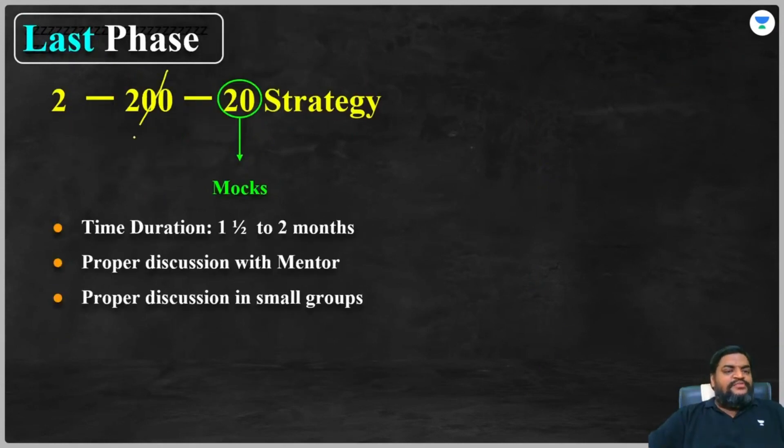What is this third part? This is nothing but mocks. Students miss this second phase, and hence they are not able to score. If you solve at least 200 advanced level sets, now you won't find enough difficulty in mocks. You will easily cruise through mocks. So 20 mocks, time duration for these 20 mocks would be one and a half to two months. You can attempt two to three mocks a week.